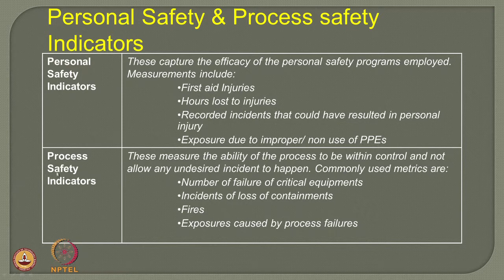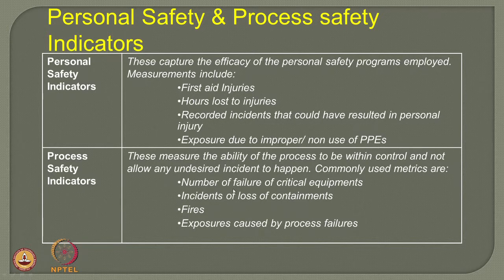Looking at process safety indicators: these measure the ability of the process to be within control and not allow any undesired incident to happen. Process safety indicators focus on blocking the occurrence of the incident itself. If there is no incident occurrence, process safety will also take care of personal safety. The commonly used measurable metrics for process safety indicators are: number of failures of critical equipment, instances of loss of containment reported, reports on fire and explosion occurred, and any exposure caused by process failures. The answers to these questions will tell the degree of compliancy of process safety management in a given system.